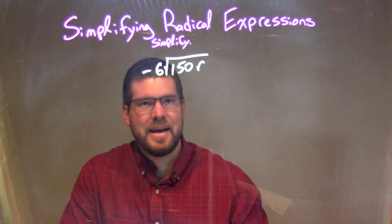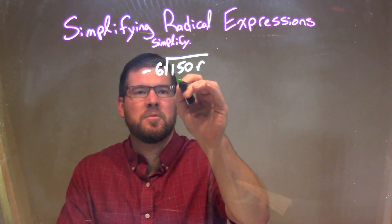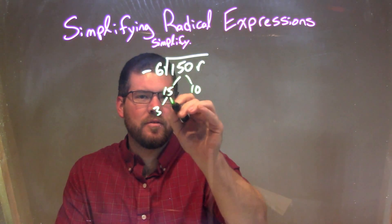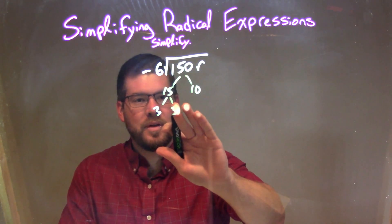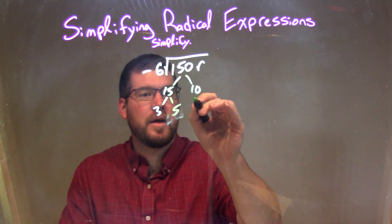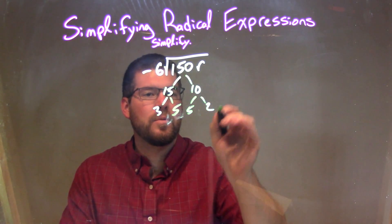150, I need to break that down. 150 can be 15 and 10. Pretty easy to see. 15 is 3 and 5, and 10 is 5 and 2.